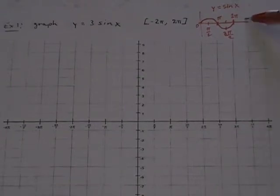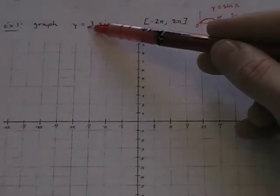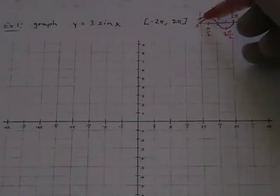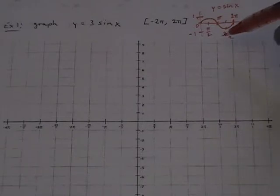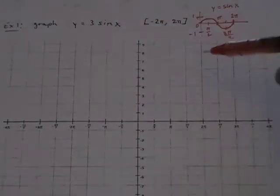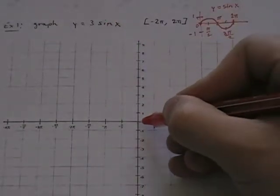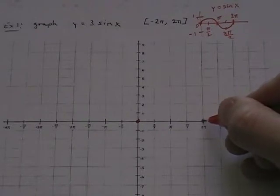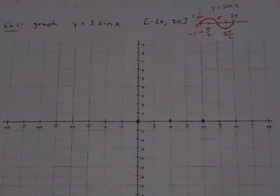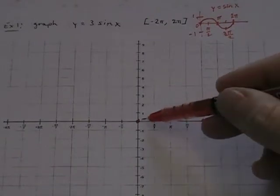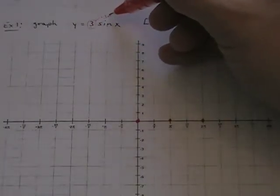I look at this graph and ask, what's changed? Well, it's going to get taller by a factor of 3. The maximum normally occurs at 1 and the minimum at negative 1. The starting point hasn't moved, so it's still going to start at 0, end at 2 pi, and have a zero in the middle at pi. It hasn't been shifted left, right, up, or down — it's only had this multiplier.